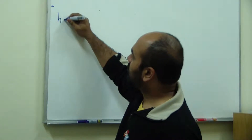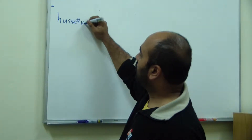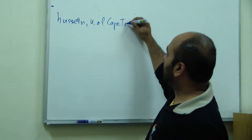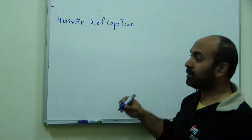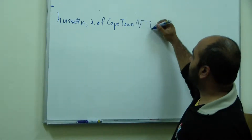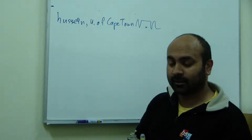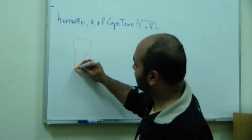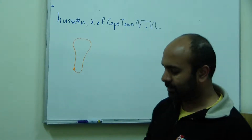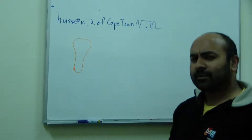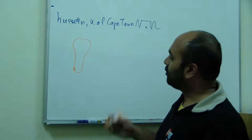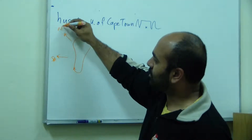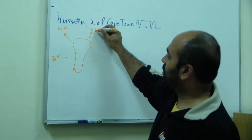Hi, my name is Hussein. I'm from the University of Cape Town. Cape Town is located on the side of a mountain in a country called South Africa. If you've heard of us, we are located somewhere about there on the African continent. South Africa is located approximately 10,000 kilometers away from South America, North America, Europe, and Asia.